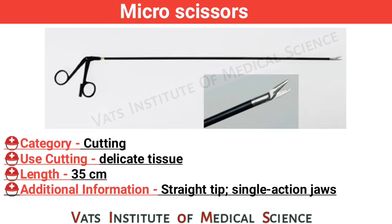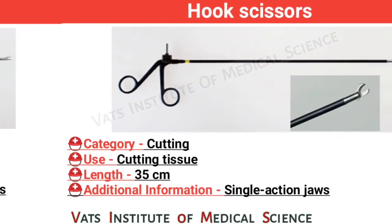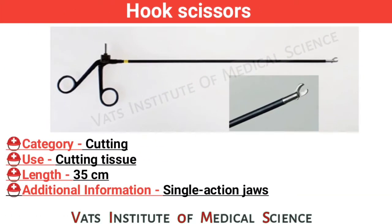Micro scissor. Category: cutting. Use: cutting delicate tissue. Length: 35 cm. Additional information: straight tip, single action jaw.